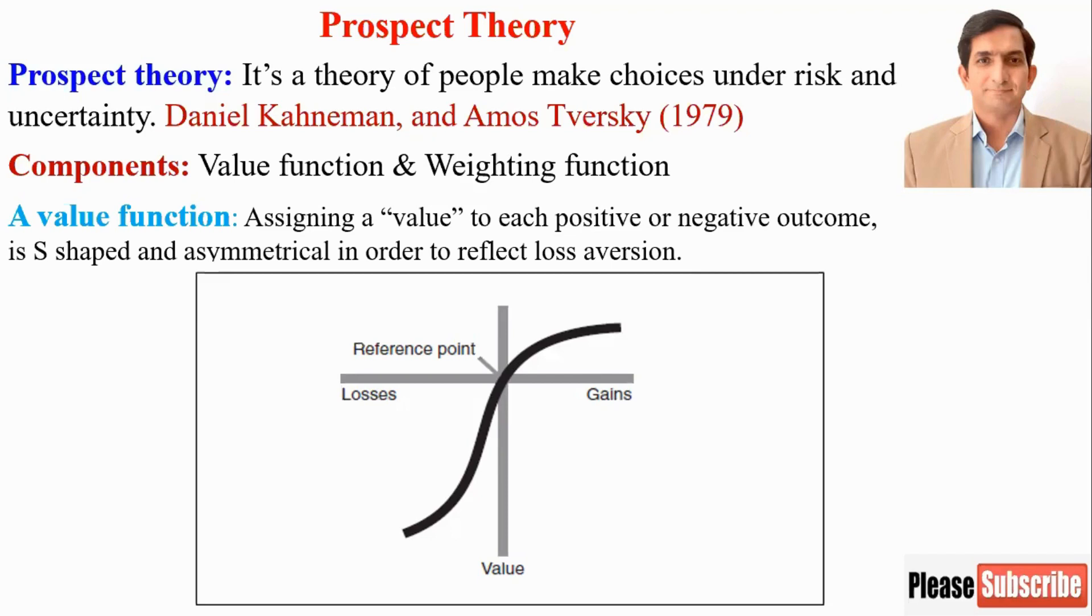In the gain area, it's diminishing value, like diminishing marginal utility in economic theory. This shows people prefer certainty over uncertainty.